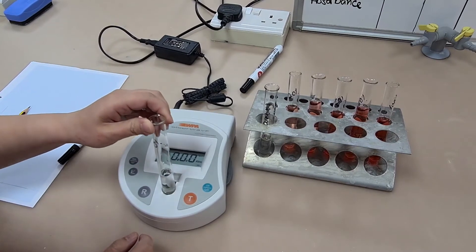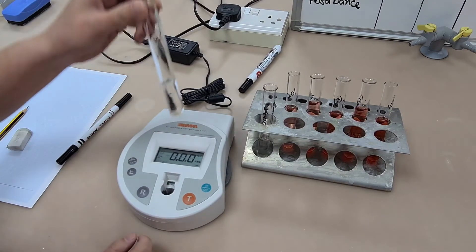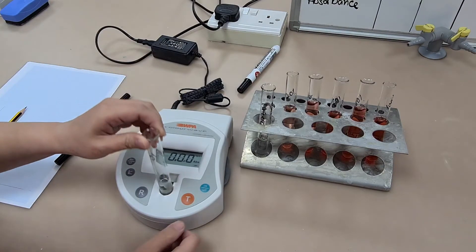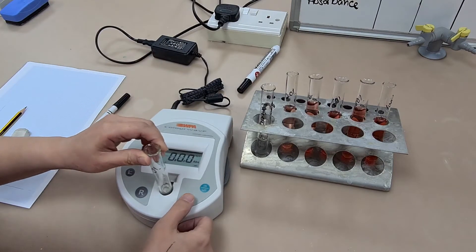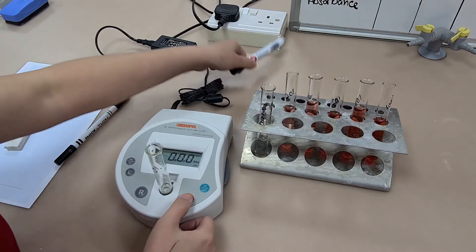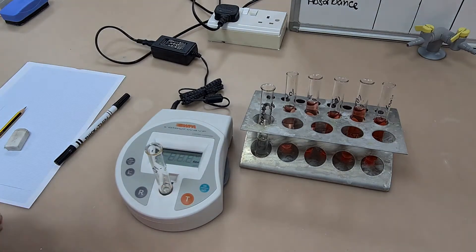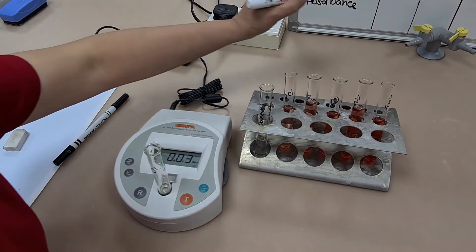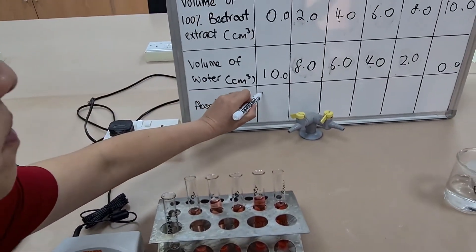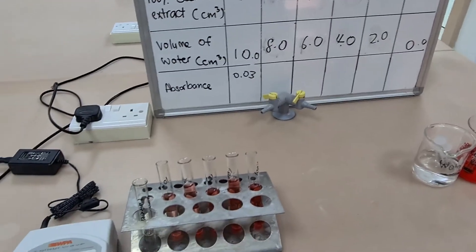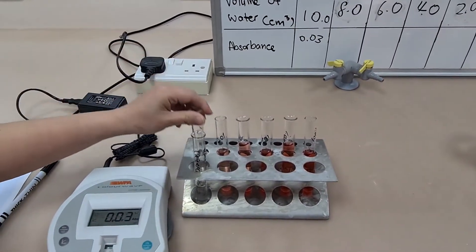So now I've tared my colorimeter I can start testing my samples. All I need to do is make sure that the sample is deep enough in the test tube that the light will actually pass through the sample. And you can see I get a reading of 0.3. And I'm going to record that down in my table that I made earlier when I worked with my dilution series for my beetroot extract.